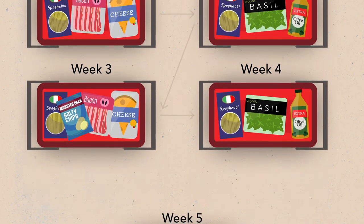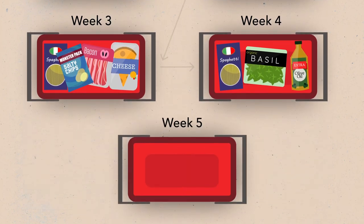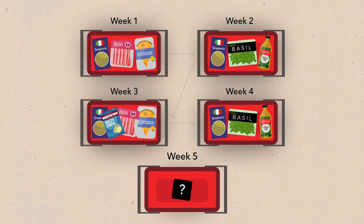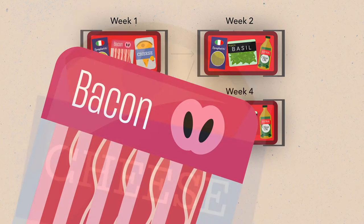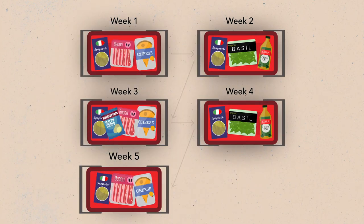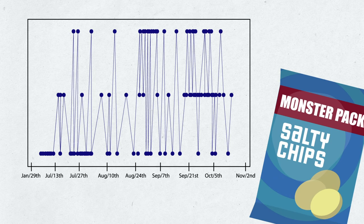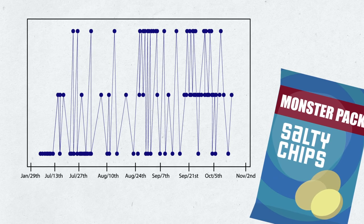Now the question will be: what will Petra buy in the next week? This example case is of course very simple. Petra is shopping weekly and follows quite a regular pattern. So we can predict that she is going to buy the same products as week 1 and week 3. Based on the shopping history, we will also see that chips appear irregularly, so they wouldn't be included in the basket prediction.